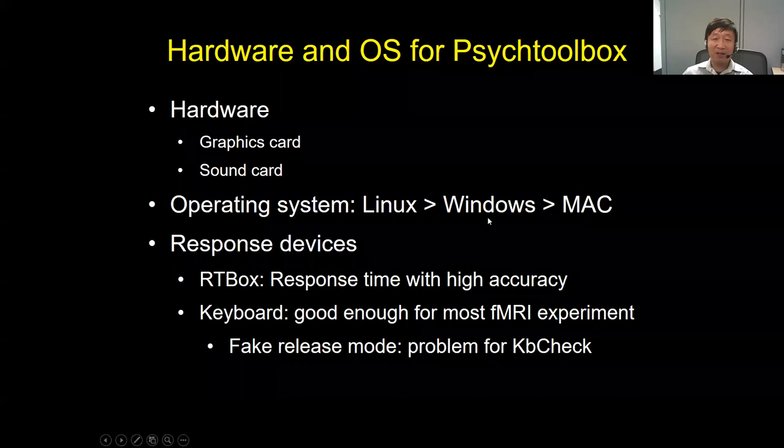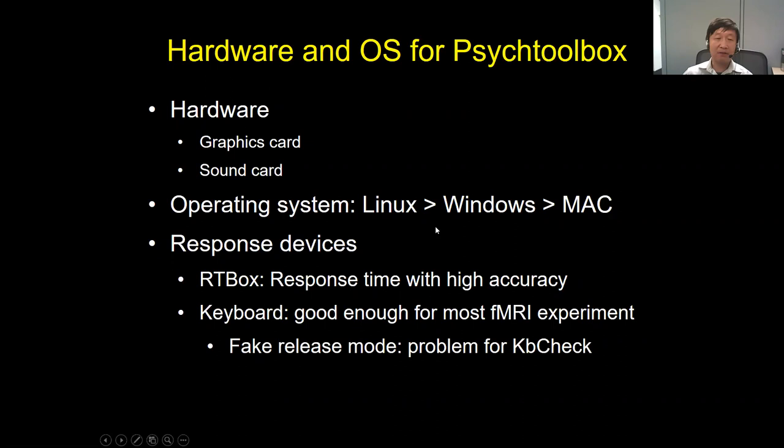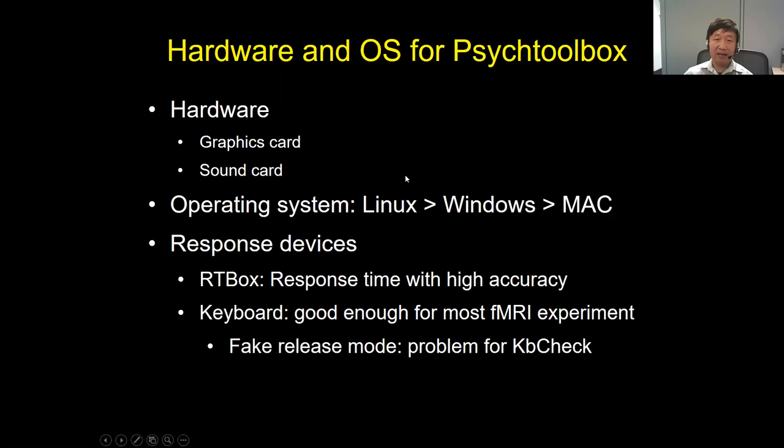In old days, Psychtoolbox was particularly developed for Apple hardware and worked only on Apple. Now it supports all hardware, but according to the Psychtoolbox developer, Apple hardware is now the worst for stimulus timing. Still, a lot of people stick with Mac for historical reasons, but Windows is pretty workable, especially for our purpose. For fMRI, pretty much any hardware works fine.